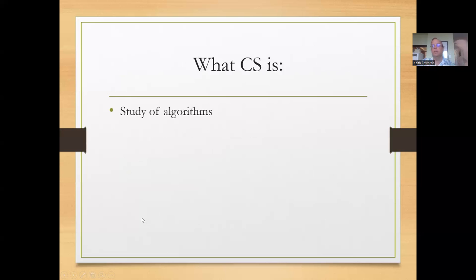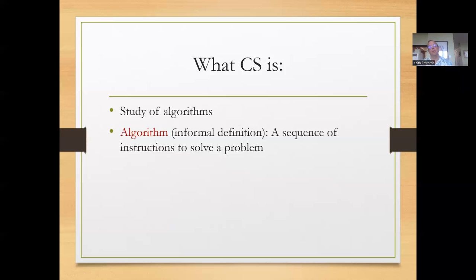Well, computer science is really the study of algorithms. And that leads us to a related question. What is an algorithm? And as an informal definition, we can say an algorithm is a sequence of instructions to solve a particular problem.